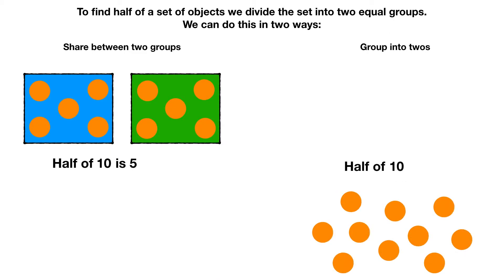Now let's find half by grouping. Again we have ten circles and we want to find half. We move the circles into groups of two, like this.